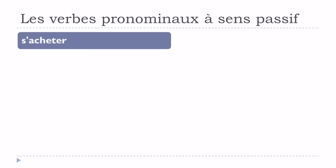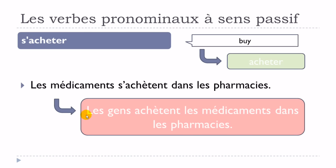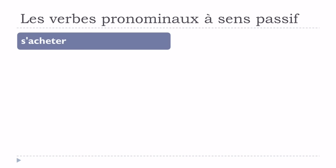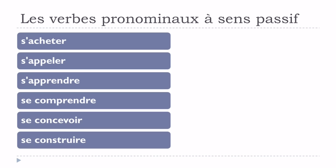Let's see a few verbs that will work as we saw with s'appeler. The first one is s'acheter. For instance: les médicaments s'achètent dans les pharmacies — it's exactly the same thing as saying les gens achètent des médicaments dans les pharmacies. So it's interesting to know the meaning of acheter. Other verbs include: s'appeler, s'apprendre, se comprendre, se concevoir, se construire.